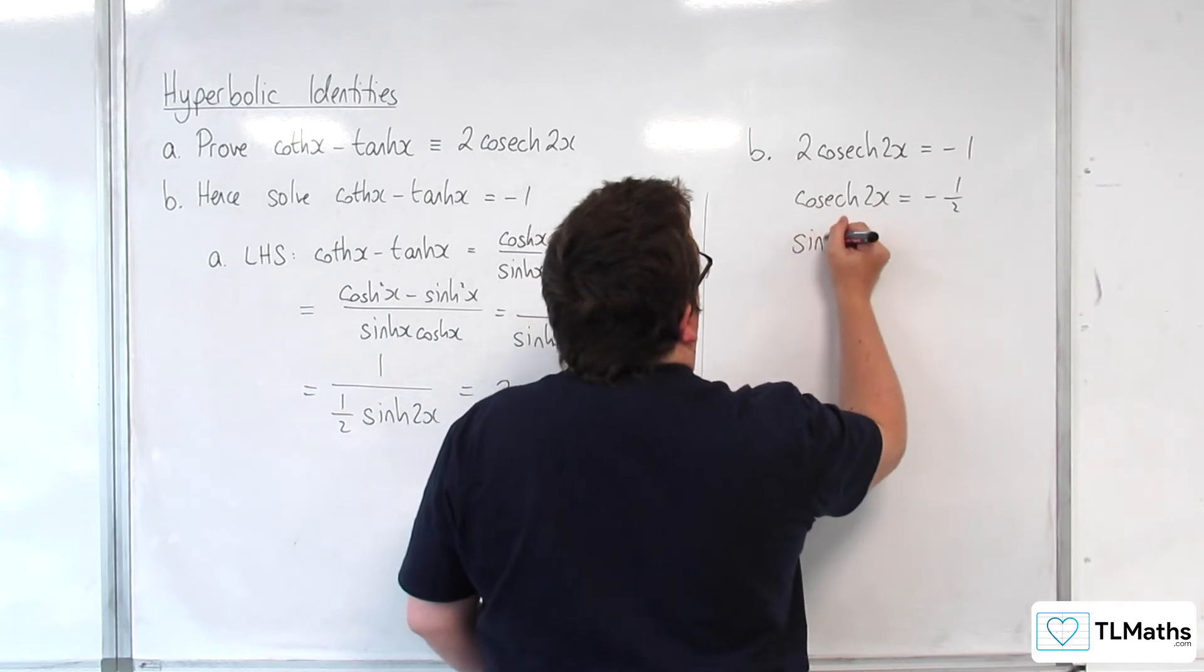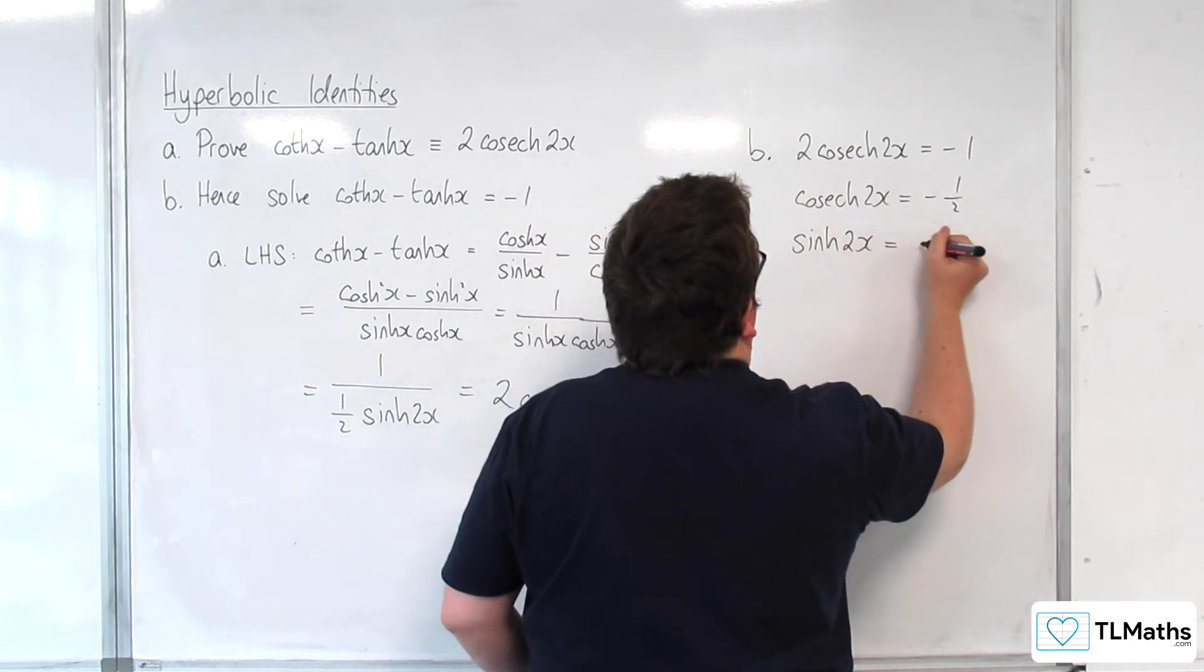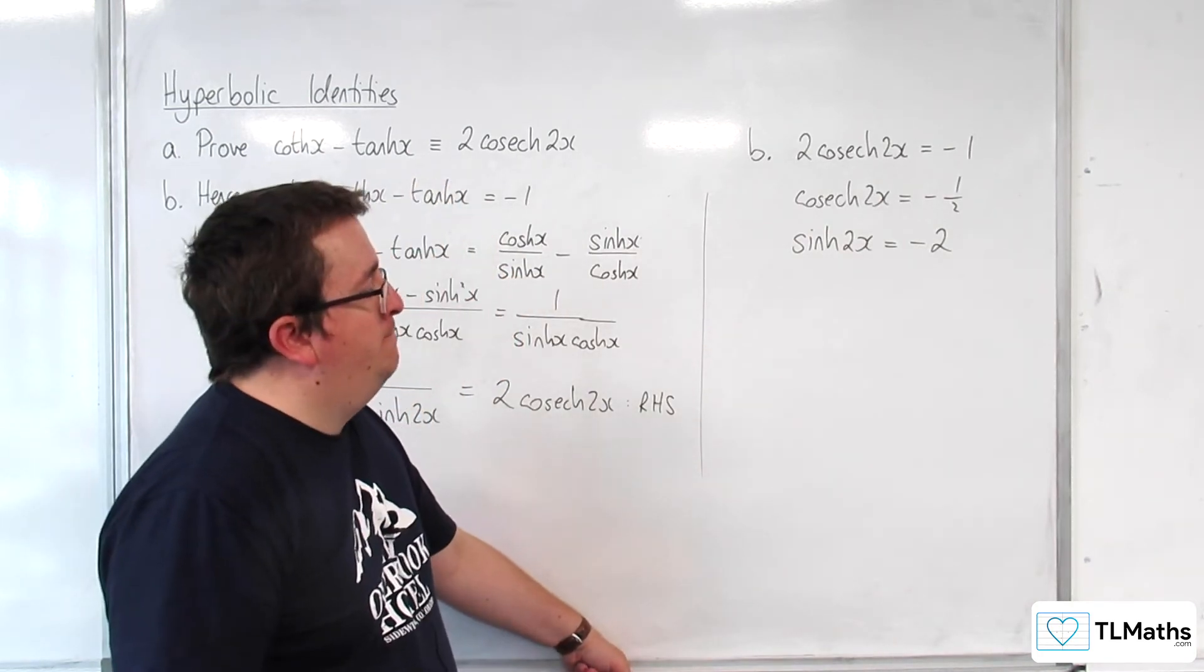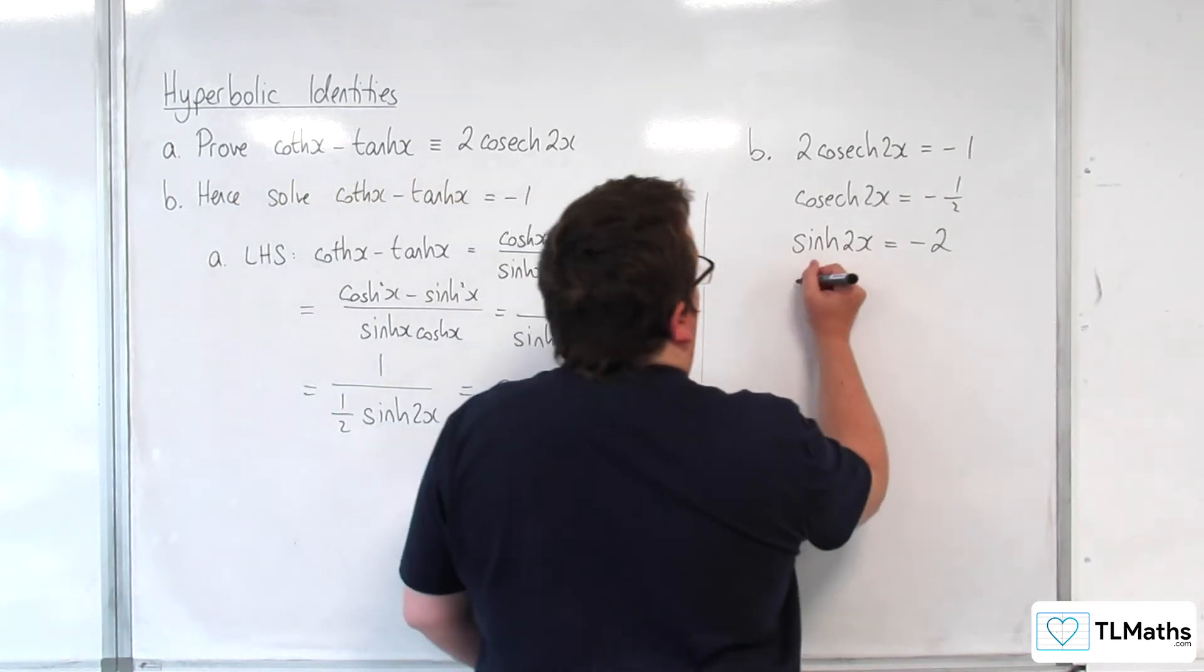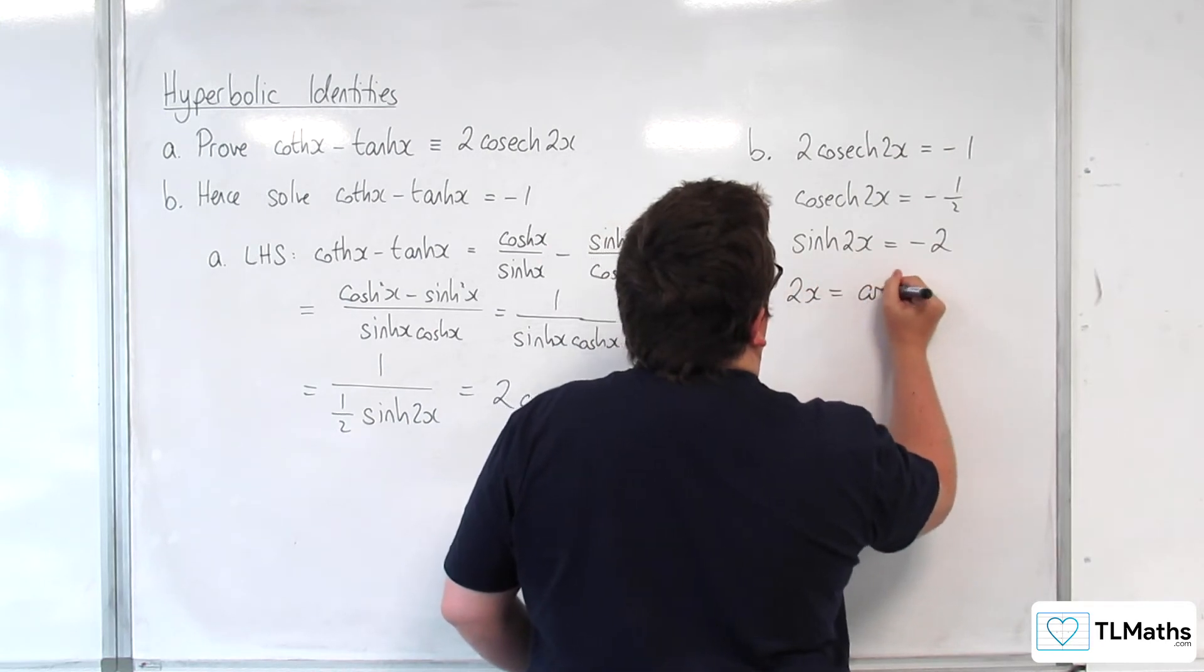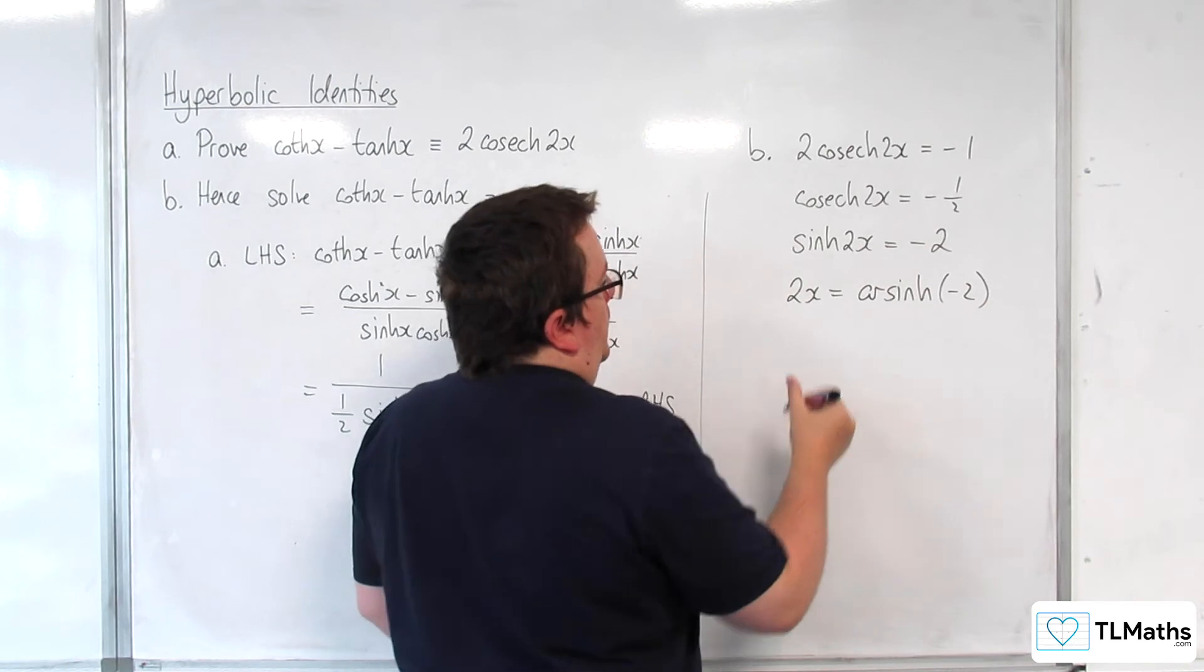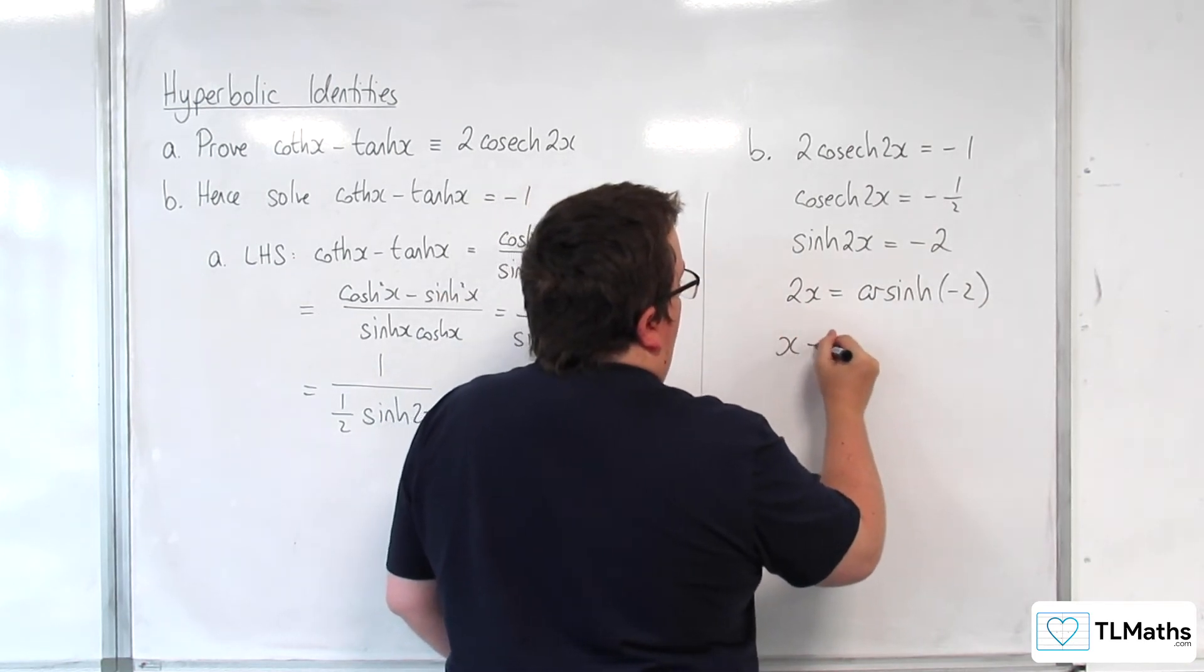So sinh of 2x will be equal to minus 2, taking the reciprocal of both sides. So then 2x is going to be arsinh of minus 2.